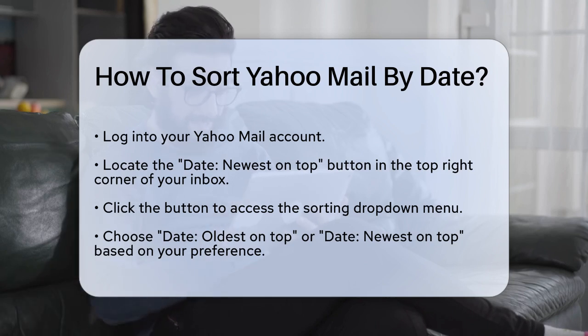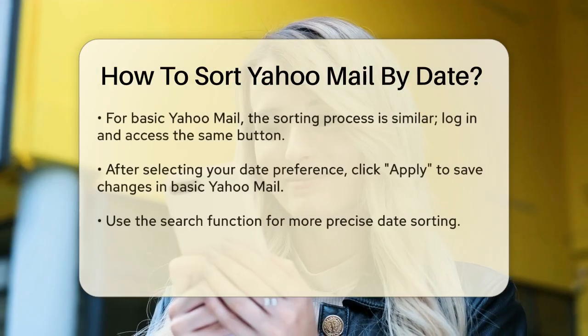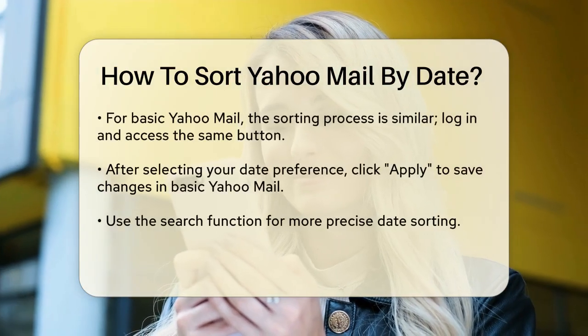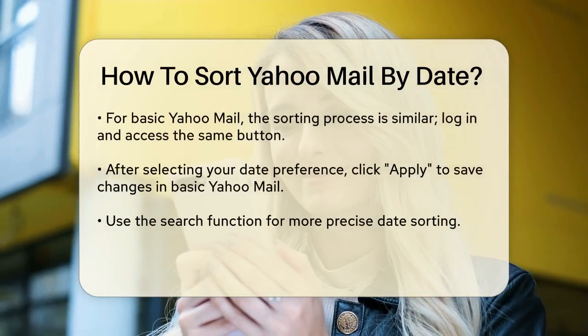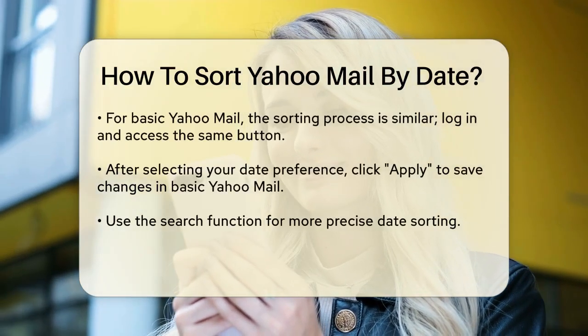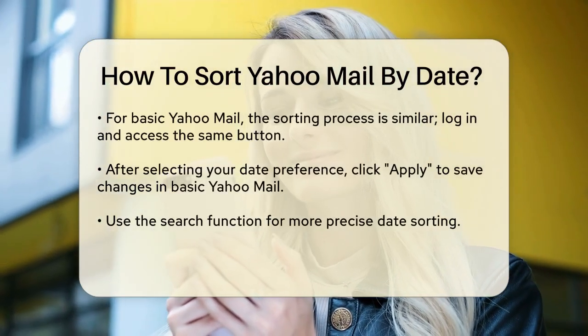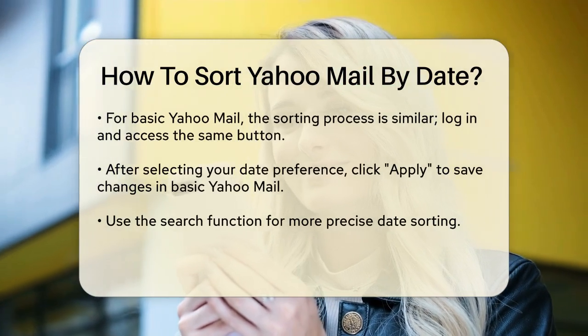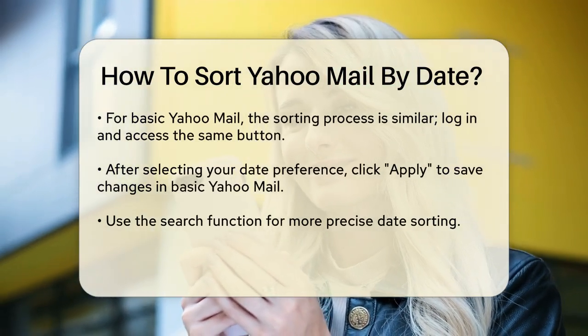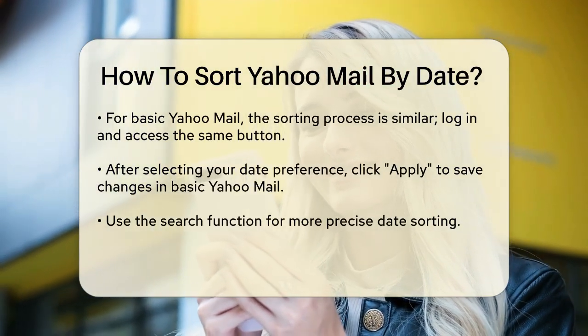Click on the Date Newest on Top button to open a drop-down menu. Here you'll see various sorting options, but you want to select either Date Oldest on Top or Date Newest on Top, depending on whether you want to see the oldest emails first or the newest ones.